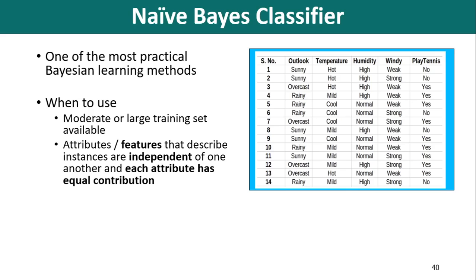As stated earlier, Naive Bayes Classifier is used whenever the features are independent. Features being independent means no pair of features are dependent on one another. For example, the temperature being hot has nothing to do with the humidity, or the outlook being rainy has no effect on wind. Hence the features are assumed to be independent.